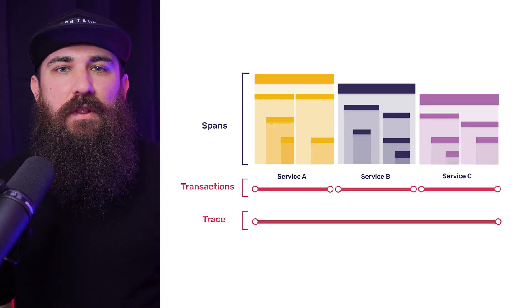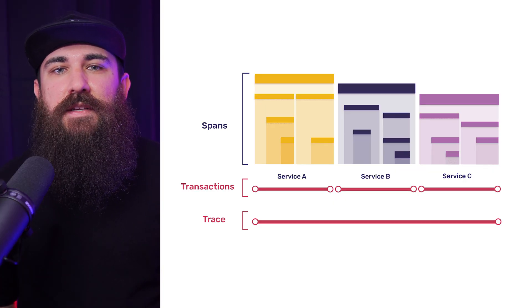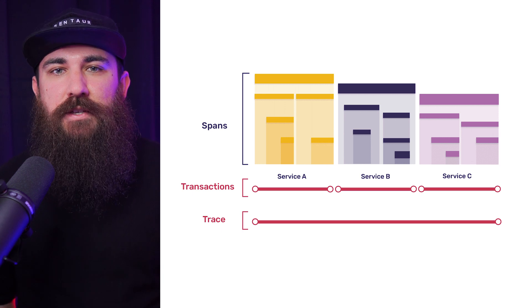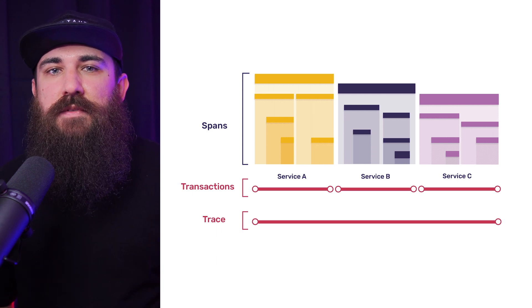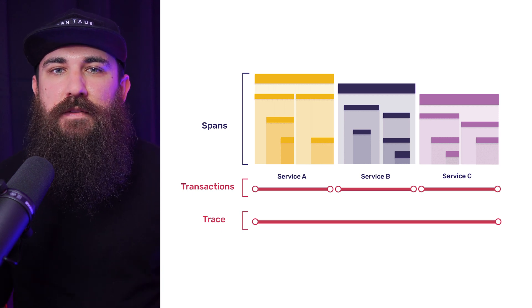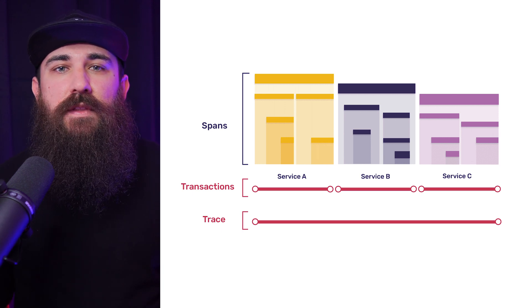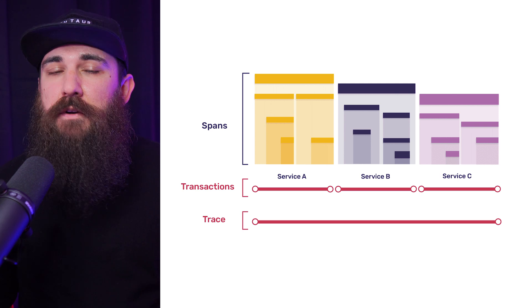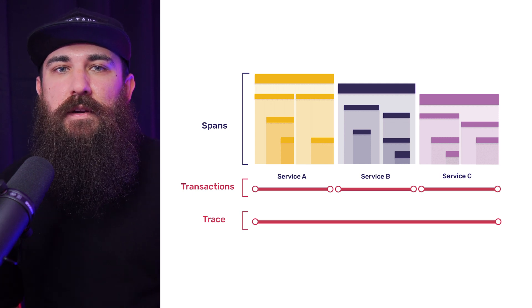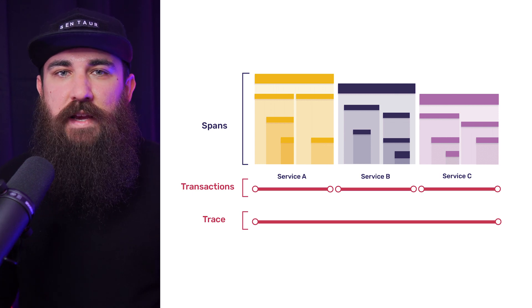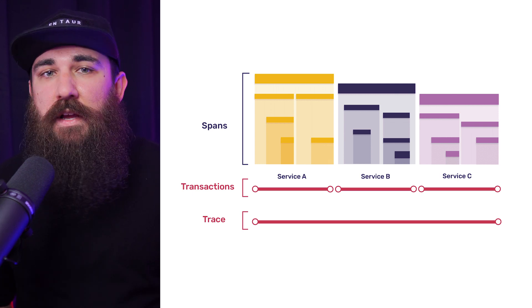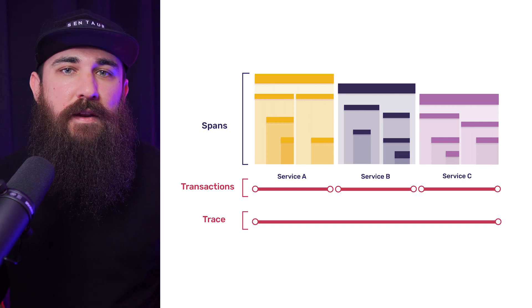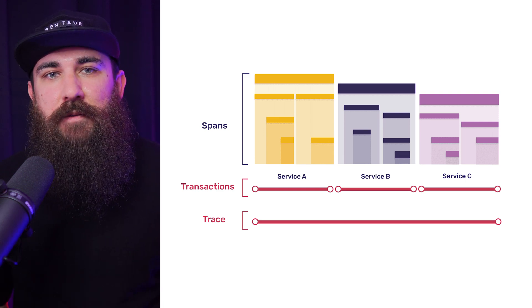In the second lesson, we learned that a trace is a chain of transactions. A transaction describes the operations that happened within the entity where it's created. We create a transaction for every part in our system, like our frontend, backend, database, etc.